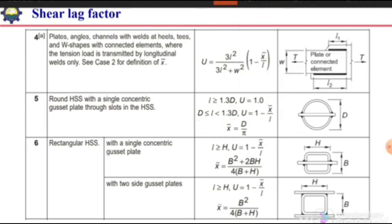For rectangular hollow sections, we have two cases: either we make a slot and insert one plate, in which case the weld length must be greater than H, and we determine the shear lag factor using the provided equation with x-bar calculated by a specific expression; or we use two gusset plates — one at the top and one at the bottom — where again the weld length must be greater than H and U is determined by the corresponding formula.